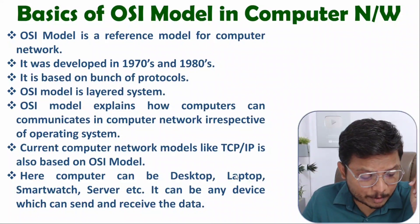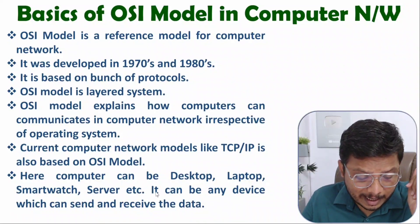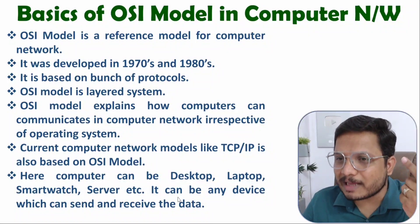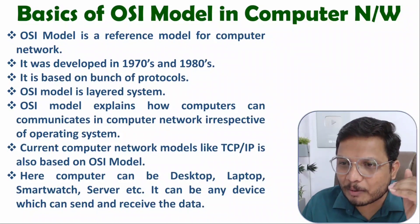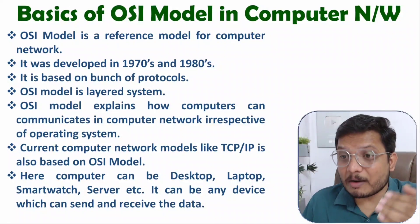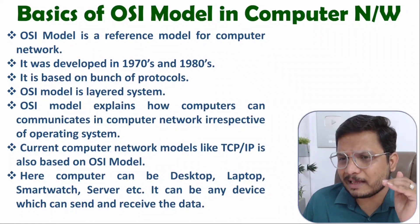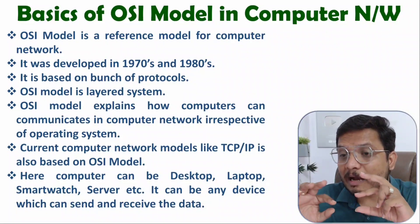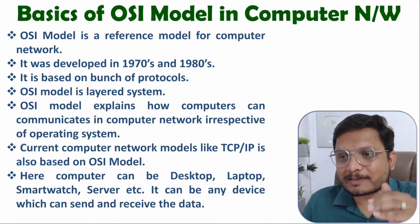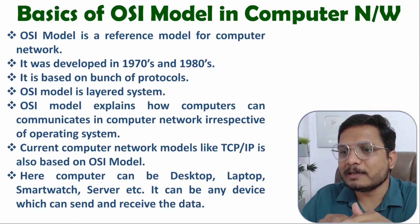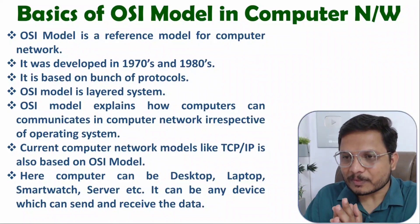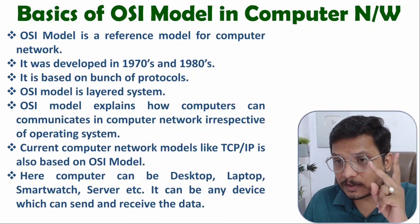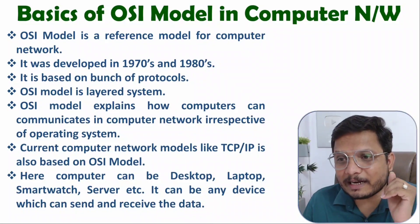A computer can be a desktop, laptop, smartwatch, server, or any device that can send and receive data. Technically, in a computer network we refer to these as nodes. There can be two categories of nodes: end nodes and intermediary nodes. In my previous videos I already covered this. So those nodes are computers and they can communicate with each other as per the OSI model.